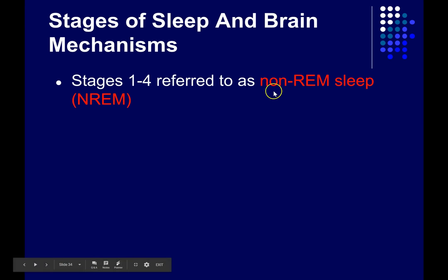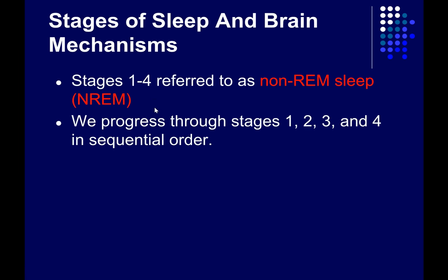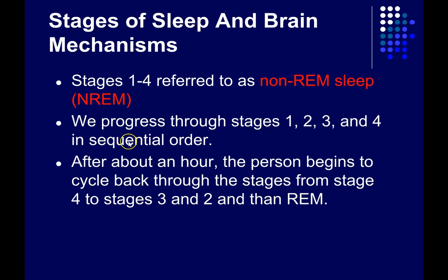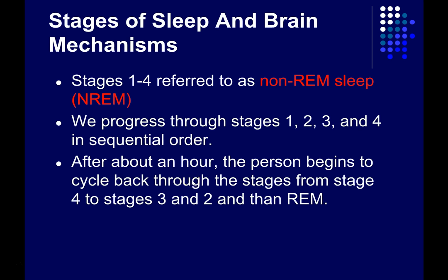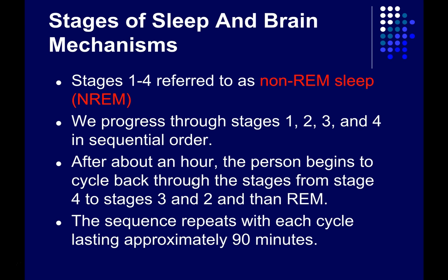Stages 1 through 4 together are referred to as non-REM sleep, or NREM. We progress in order through stages 1, 2, 3, and 4. Then, after about an hour, we start moving backward through the stages — from 4 to 3 to 2 — but instead of going back into stage 1, we typically go into REM sleep. This pattern repeats over and over again throughout the night. The whole process takes about 90 minutes and is known as the sleep cycle.